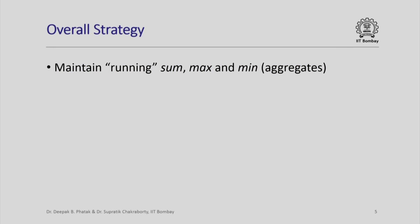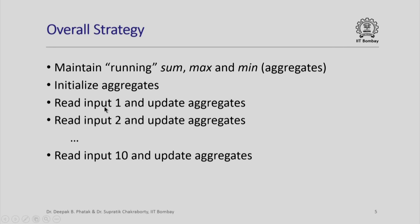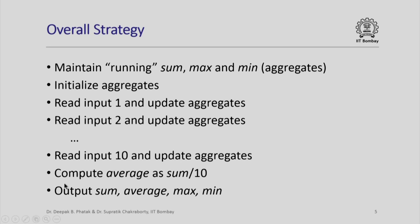Here is what an overall strategy might look like. We might want to maintain a running sum, max, and min value — these are aggregates of the marks we are processing. We can initialize these aggregates to appropriate values, then read each student's marks in quiz one of CS101 and update these aggregates. After doing this for all 10 students, we compute the average as sum divided by 10 and output sum, average, max, and min.